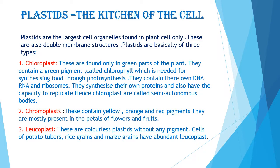Students, do you remember that in the previous video I told you about one more cell organelle which has a double membrane? Yes, you guessed it right — it is mitochondria, which has a double membrane around it. Plastids are basically of three types: chloroplast, chromoplast, and leucoplast.